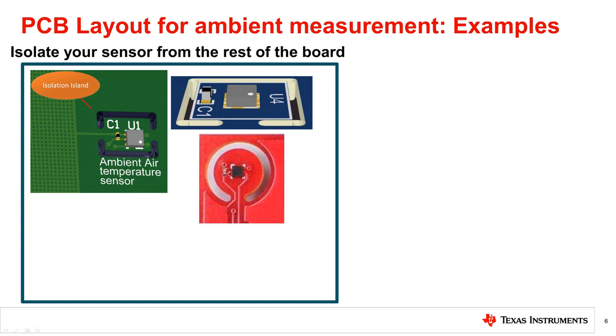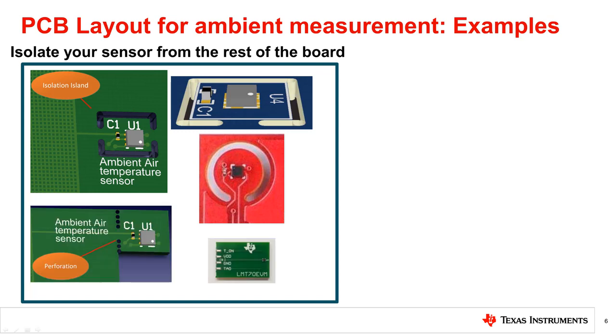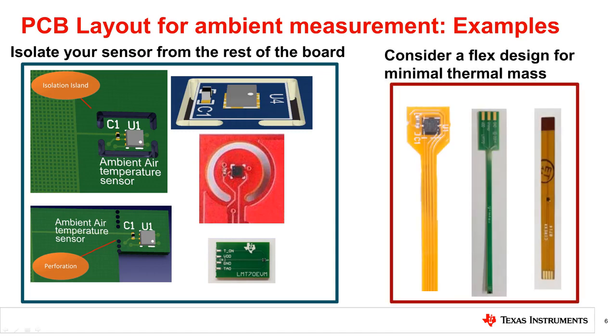Let's look at some examples about how we can place our sensor on a board for ambient measurements. For best results, consider using a PCB cutaway around your temperature sensor in order to better isolate the temperature sensor from conducting heat through the board and to reduce the thermal mass surrounding the sensing element for fast response. If possible, a perforated section can also provide good isolation, and if required, it can be separated and used at even greater distances from the rest of the board. For minimal thermal mass, you may also use a flexible board design. Sensors mounted on a flex PCB can show significantly better thermal response to ambient environment.